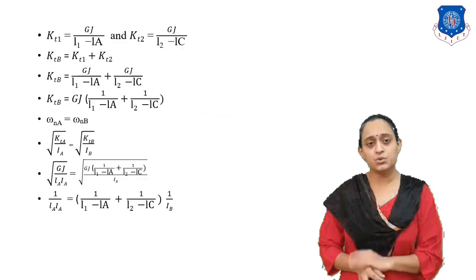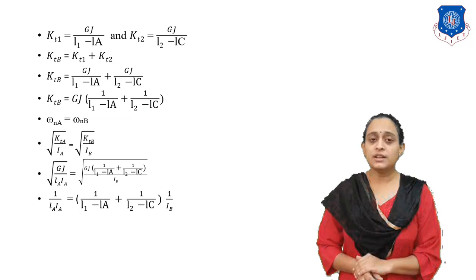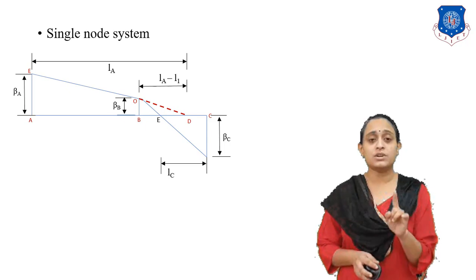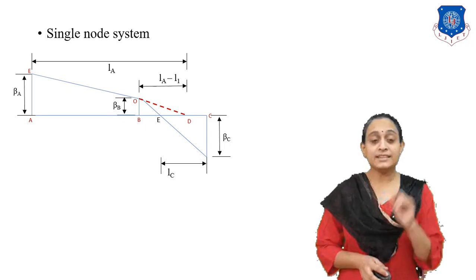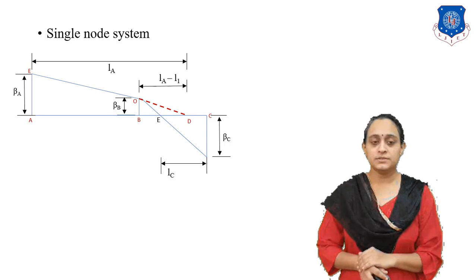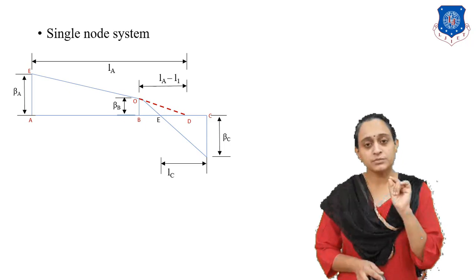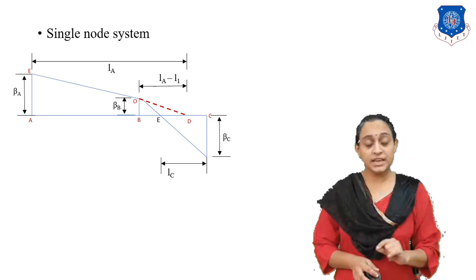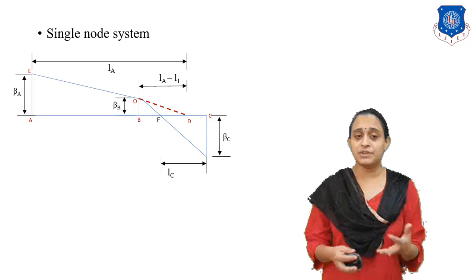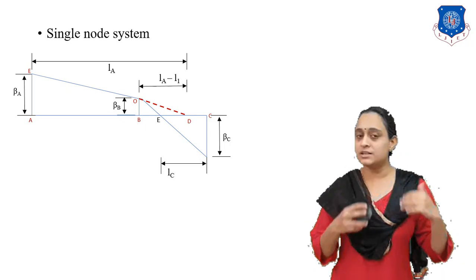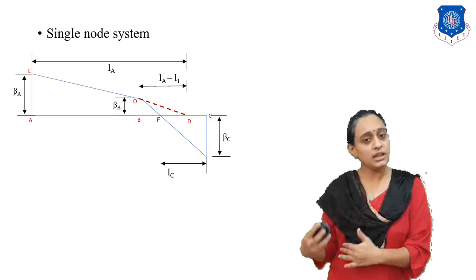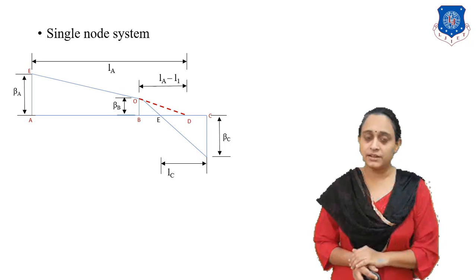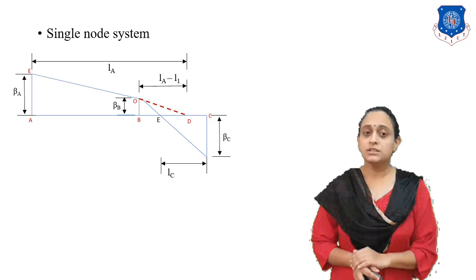Now let us consider the single node position. In the single node position there is only one point where we get no vibration, and that point is E. The length from rotor C to point E is L_C. In this condition, rotor A and B rotate in the same direction and rotor C rotates in the opposite direction, so by this effect we get the nodal point position at E.